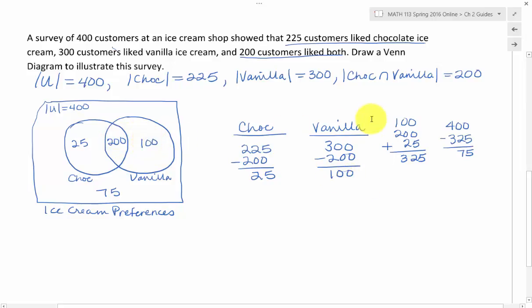Then I wanted to find out how many belong in the universe. So I added up the people who liked vanilla, who liked both chocolate and vanilla, and who liked chocolate, and I got 325.